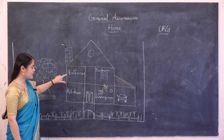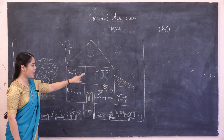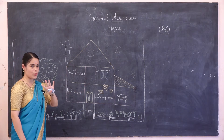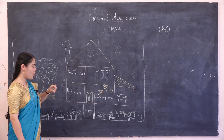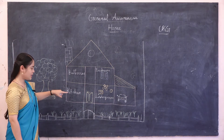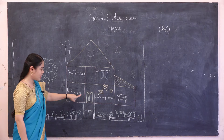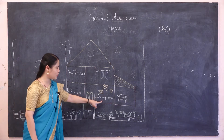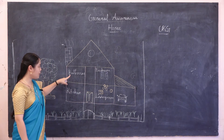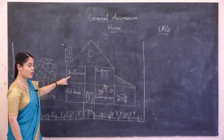In this house, there are four rooms. What are they? Kitchen, living room, bedroom and bathroom.